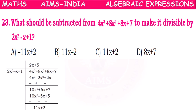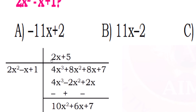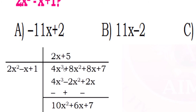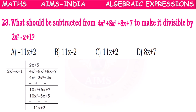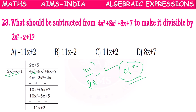So according to long division method, the expression which is to be divided is taken here and with what we are doing division, this is taken here. With the first term of the divisor, we have to divide the first term of the dividend: 4x³ by 2x², that equals 2x. So 2x will be the first term in the quotient.